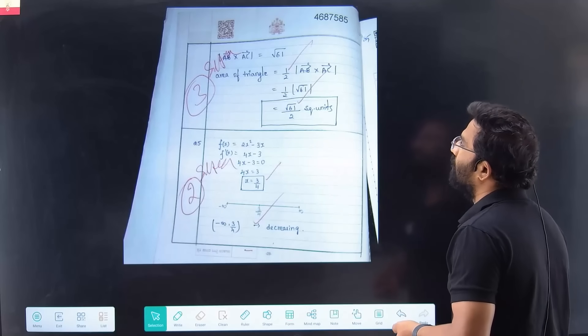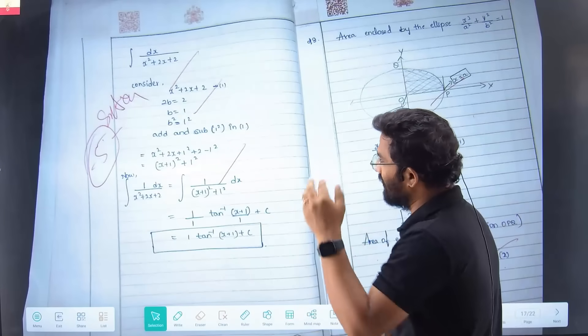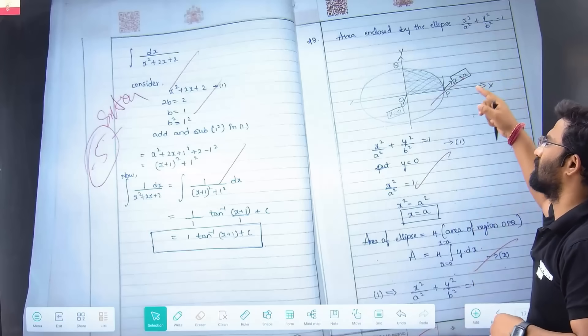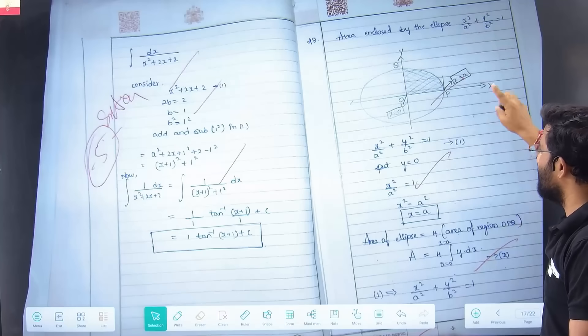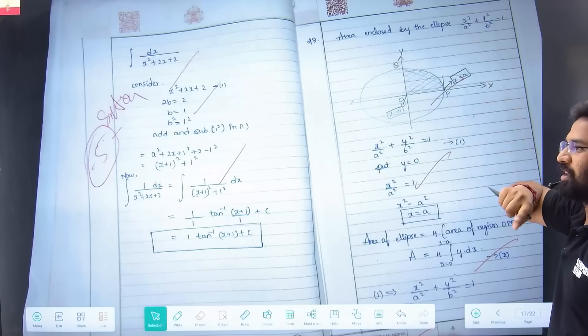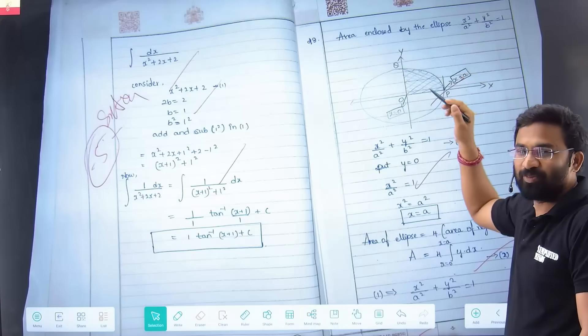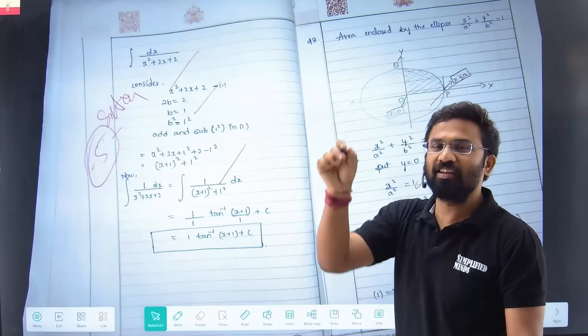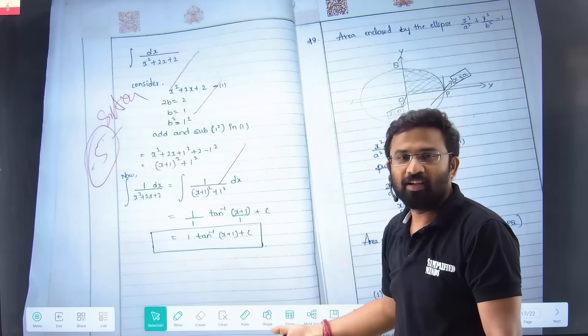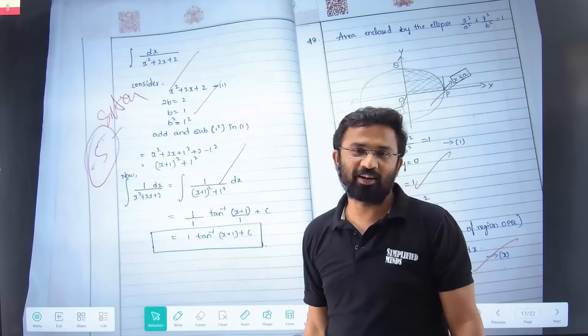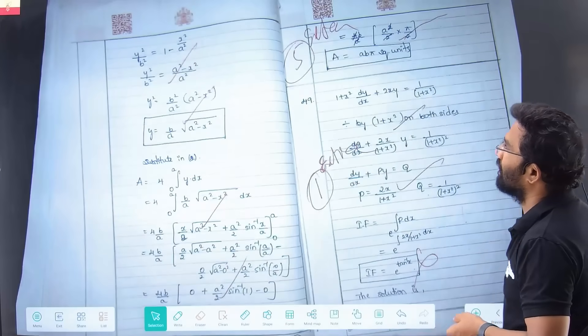Extra questions should always be written at the end. She has written integration also, and everything - five markers, she has not left anything. This area enclosed by ellipse is very easy, you can easily score five markers. In one of the papers, instead of writing ellipse, she has written circle - one mark cut. The exam time tension, ellipse versus circle. If she has done all the question correctly but in the diagram wrote circle instead of ellipse, they cut one mark.